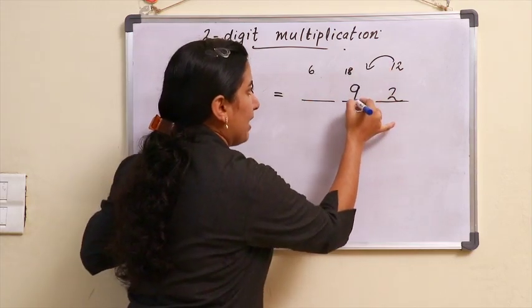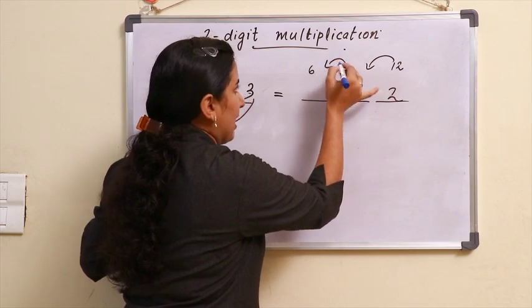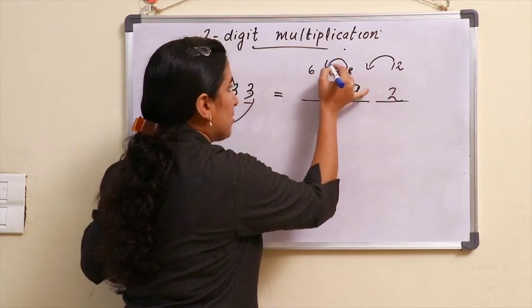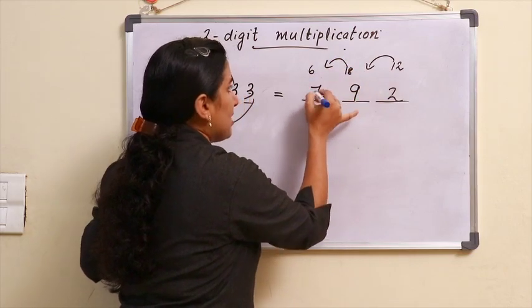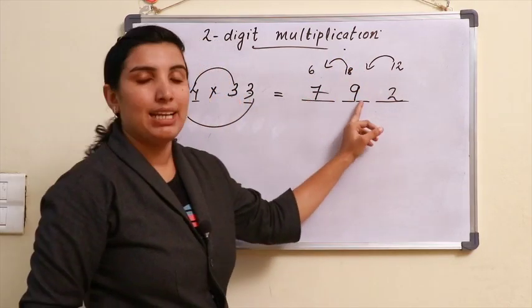This is 9 here. 6 plus 1 is 7. The answer is 792.